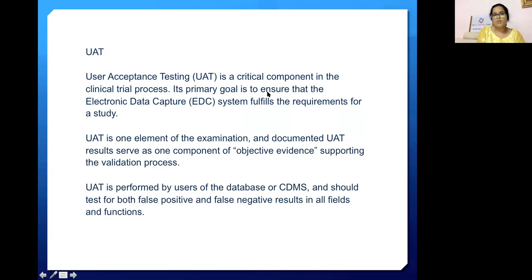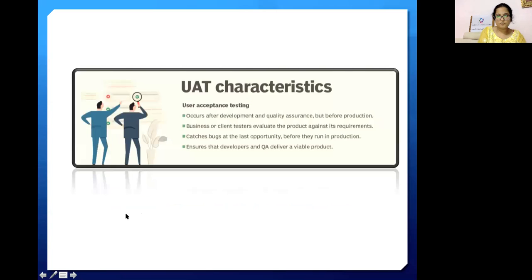Another term is UAT — User Acceptance Testing. As the name suggests, UAT is a critical component in the clinical trial process. Its primary goal is to ensure that the electronic data capture system fulfills the requirements for a study. UAT results serve as one component of objective evidence supporting the validation process. UAT is performed by users of the database or CDMS and should test for both false positive and false negative results in all fields and functions. UAT occurs after development and quality assurance but before production, and business or client testers evaluate the product against its requirements.